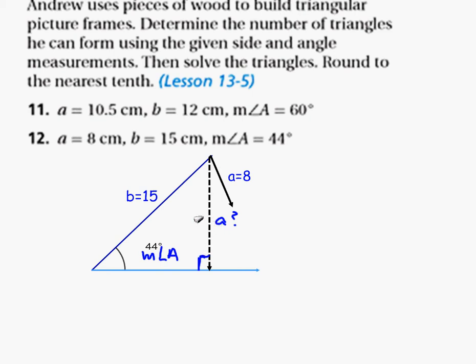if it's bigger than 8 but less than 15, it could form two triangles. But if it's smaller than this length right here, then it's not going to form any triangles. So that's what we need to find out.